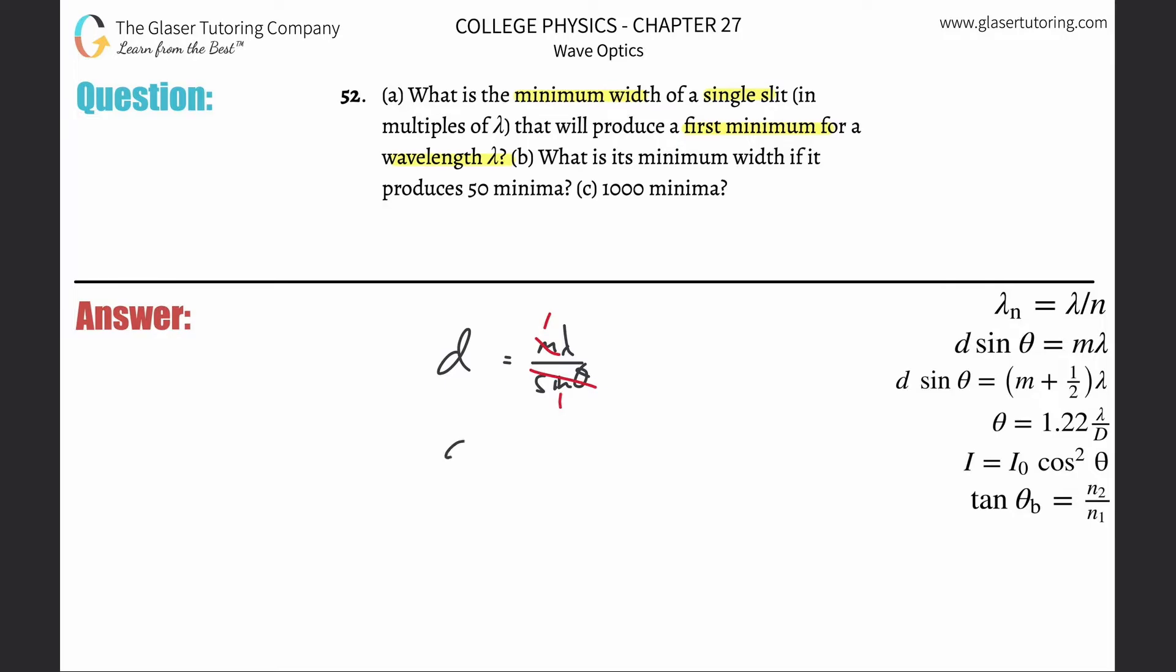So in other words, to answer this question, the distance of the slit is equal to just lambda. Yeah, that's A and B. What is the minimum width if it produces 50 minima?